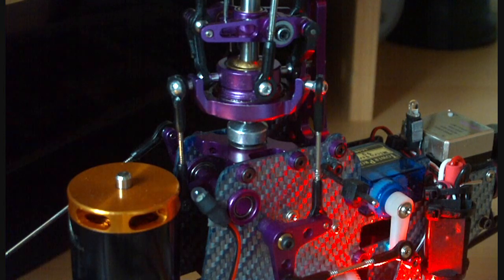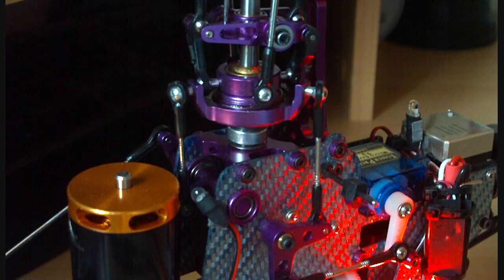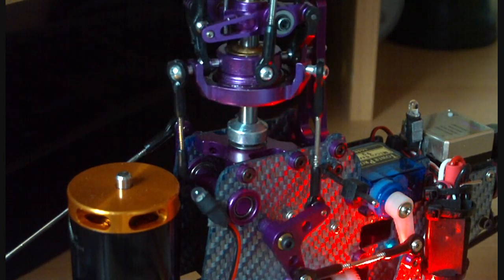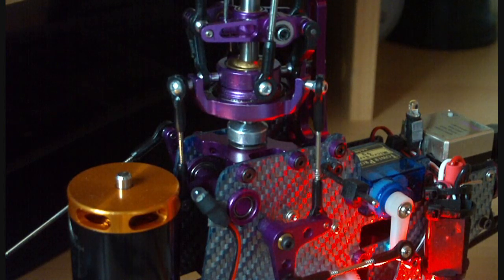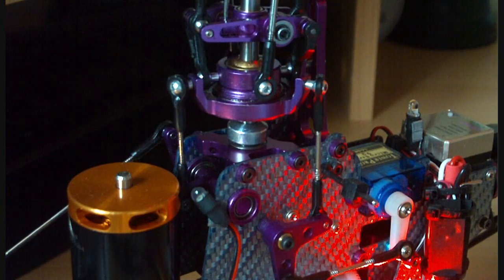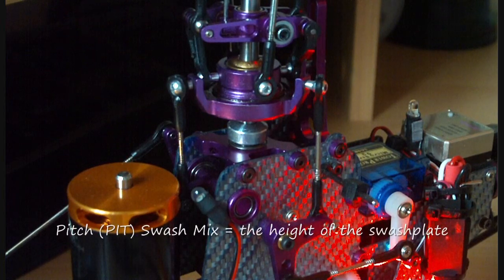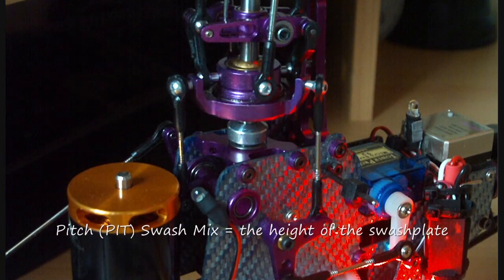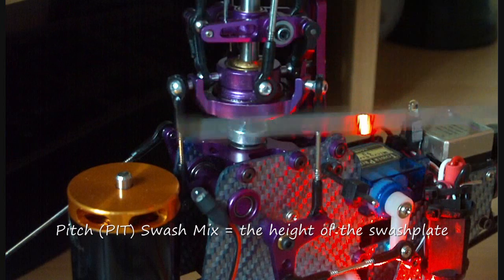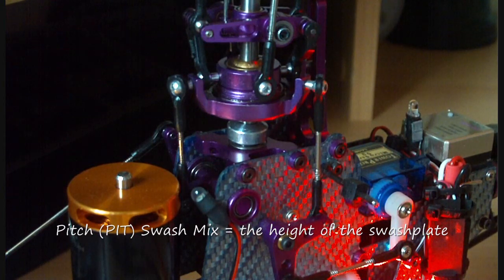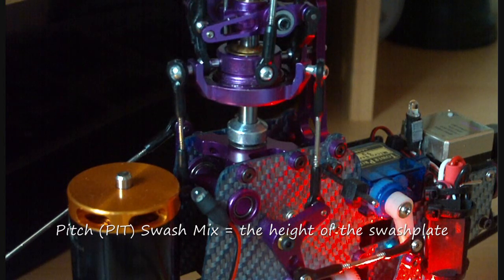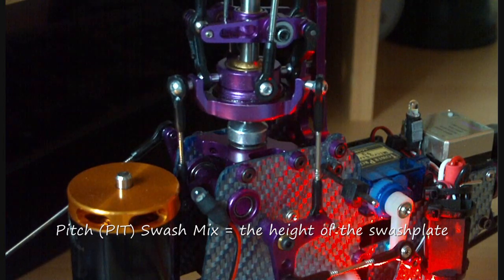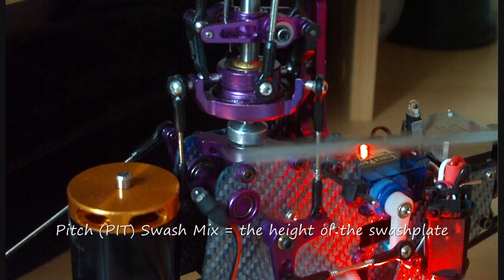For example, if my Swash is operating the wrong way around—so as I increase the throttle, it goes down, and as I decrease the throttle, it goes up—all I need to do is go into the menu and change it from a positive to a negative, or a negative to a positive on the Pitch Servo Mix. Because remember, this is the Pitch going up and down, and that will change the direction for the movement. Then when I increase the throttle, it goes up, and I decrease the throttle, it goes down.